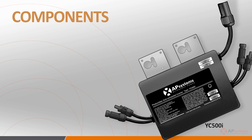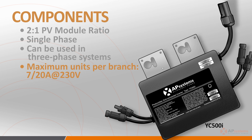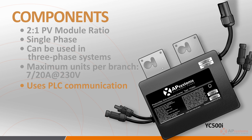The YC500i also features integrated VDE-certified relays, meeting safety requirements for countries around the world. The AP Systems YC500 functions as two inverters built into a single case. It's a single-phase inverter, but given its architectural flexibility, it can also be used in both single-phase and three-phase applications. The YC500i operates at 50 hertz, 230 volts, has an IP67 enclosure, and operates with two independent MPPTs and integrates VDE relays. The maximum number of units per 230-volt, 20-amp circuit is seven, or a total of 14 PV modules. The YC500 uses Powerline Communication or PLC protocol to communicate with the ECU, and while the warranty varies depending on pricing, it has been engineered for a design life of 25 years.